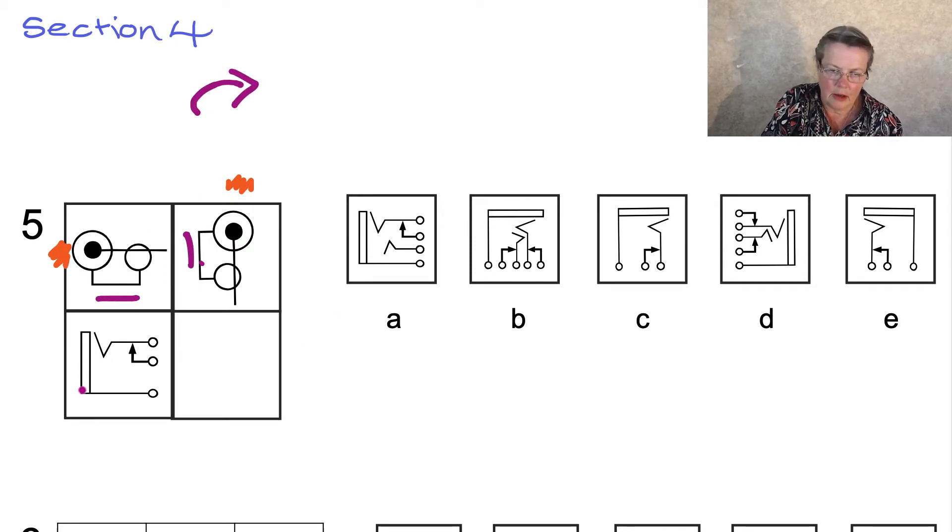So our—looks like a fairground ride doesn't it—our sort of double roof, it's going to go from nine o'clock up to twelve o'clock. And we're going to end up with our one, two, three little things down at the bottom because they're going to go from three to six. So let's see what that gives us so far.